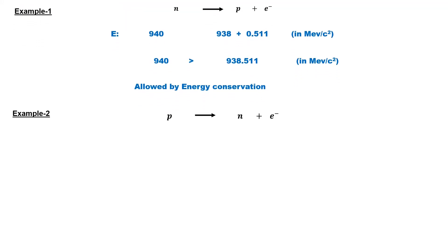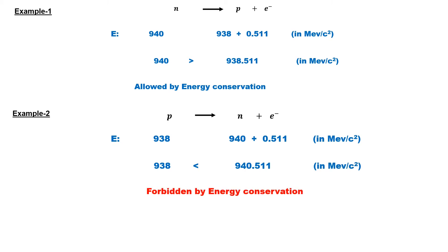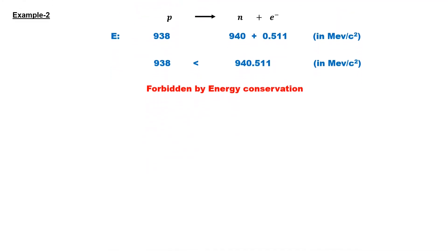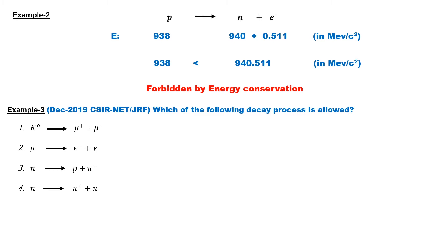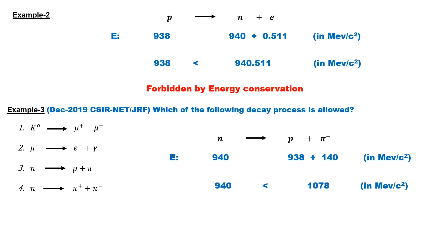If instead the proton decays into the neutron and electron, the mass of the parent proton (938 MeV) is less than the total mass of the daughter particles, which is a violation of energy conservation — so this decay is forbidden. In the December 2019 CSIR NET exam, it was asked which reaction is allowed. The first reaction is allowed, while the rest are forbidden for different reasons. The third reaction violates energy conservation: the parent particle has mass 940 MeV, while daughter particles have masses 938 and 140 MeV, making the total daughter mass greater than the parent.